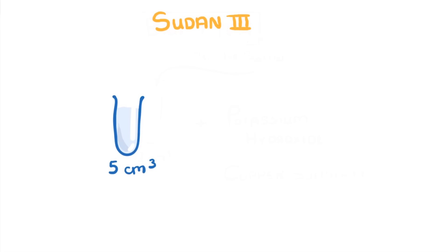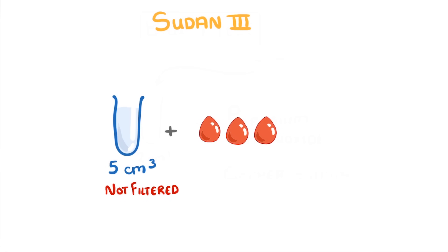For the Sudan 3 test for lipids, you need five centimeters cubed of your food sample — importantly you don't need to have filtered it. Add three drops of Sudan 3 stain solution to the test tube and gently shake it. If lipid is present it will get stained by the Sudan 3 solution, and as the lipid separates from the water because it's not soluble, you'll see a bright red layer at the top.